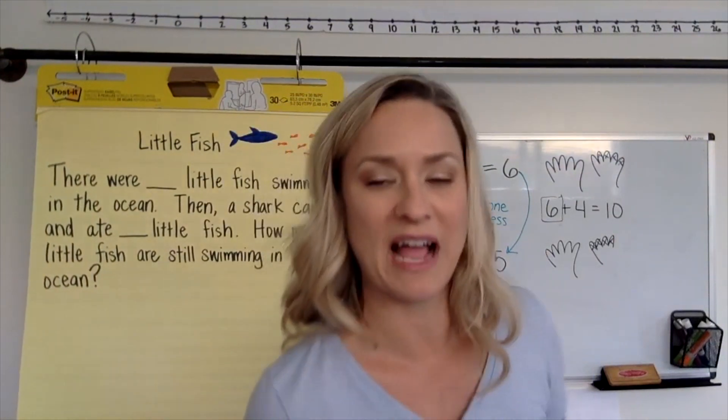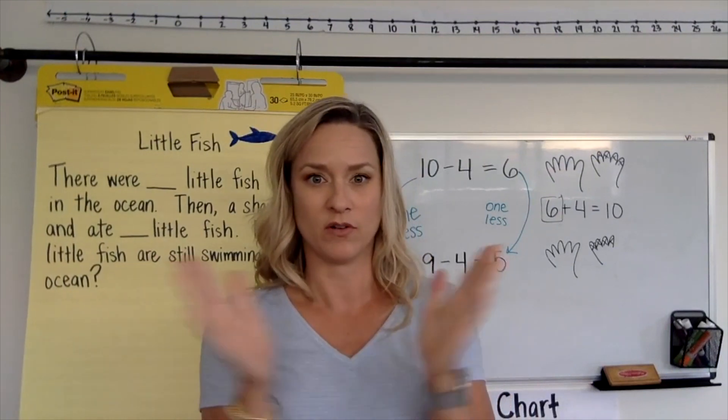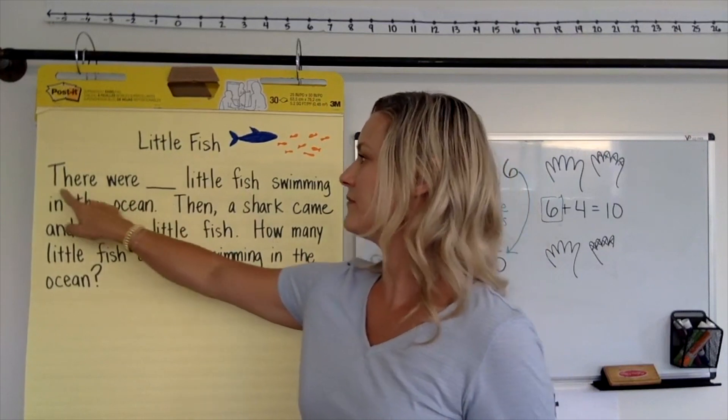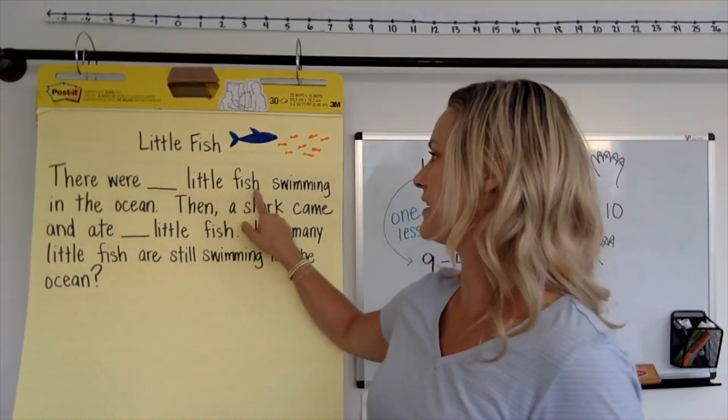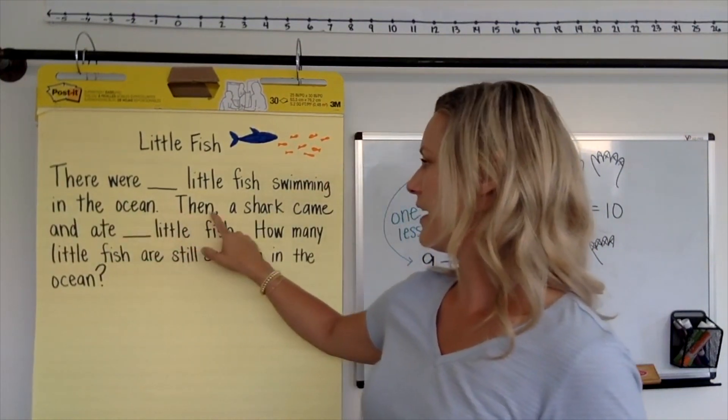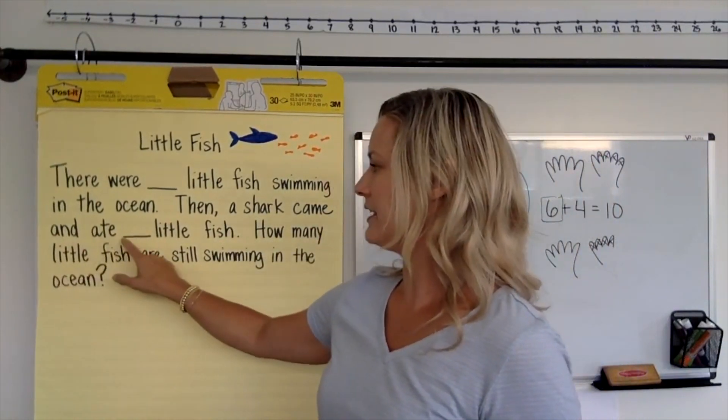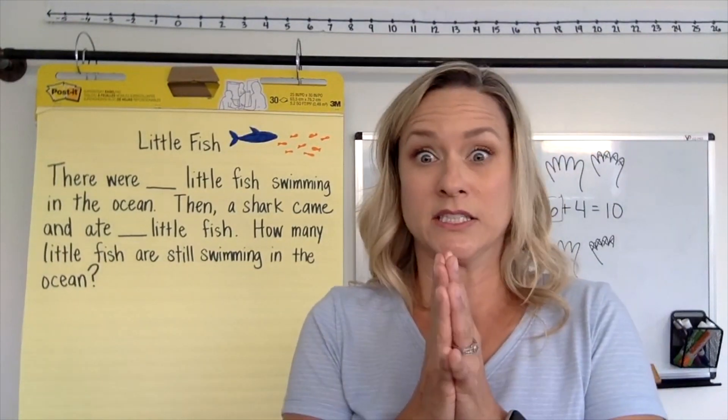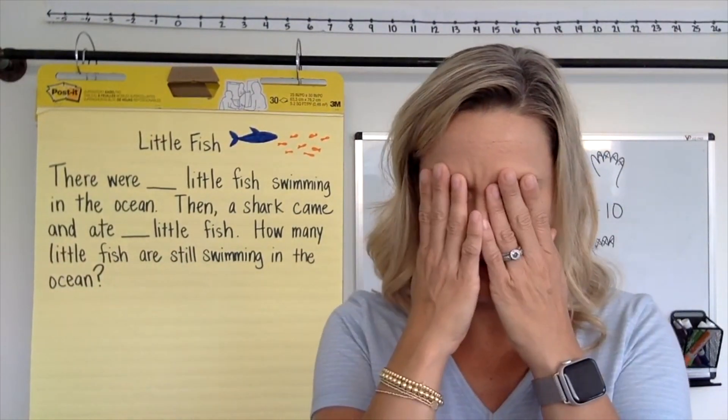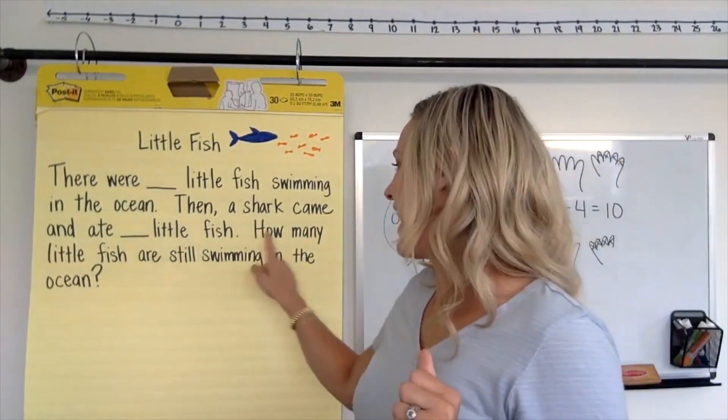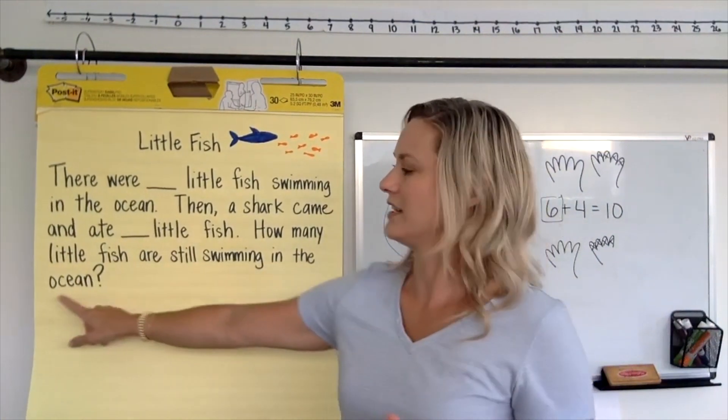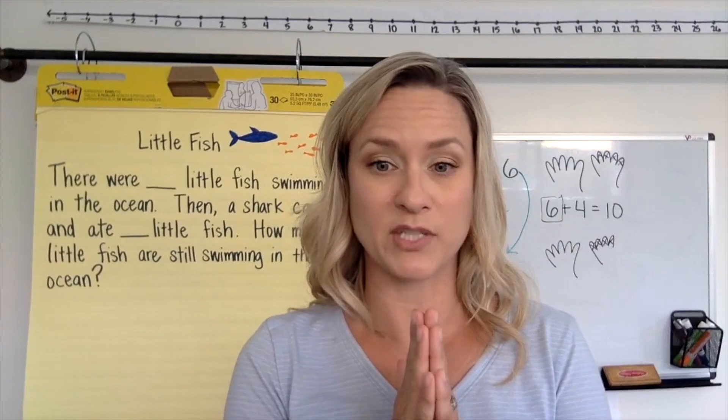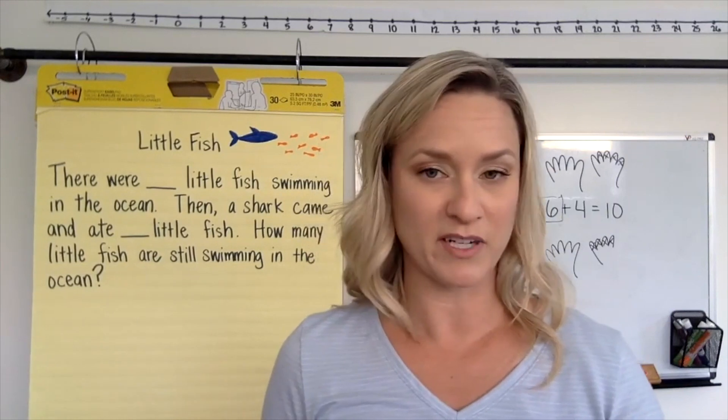Okay. Here we are going to try out our story today. And our story is about little fish and, watch out, sharks. Okay. So let's read our story together. Will you read it with me? Little fish. There were little fish swimming in the ocean. Then a shark came and ate little fish. So far we know there were some little fish swimming in the ocean. And then the shark came and he ate some of those little fish. Oh no. But it's the cycle of life. How many little fish are still swimming in the ocean? Let's read this story back again. But I'm going to put in a number set. So I'm going to show you your just right number sets that you can choose from. And then let's choose one to put in to solve.